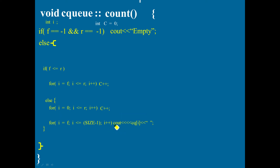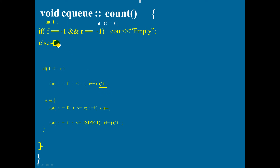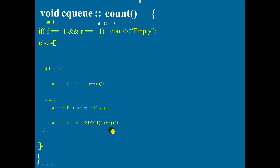Similarly, now you are not displaying the elements, you are counting the elements, so the cout must be replaced with a c++. Variable c contains the number of elements in the circular queue. So in this else part — the opening and closing curly bracket — here you should display the answer: number of elements is equal to c. In order to write the code for the count function, remember these changes.